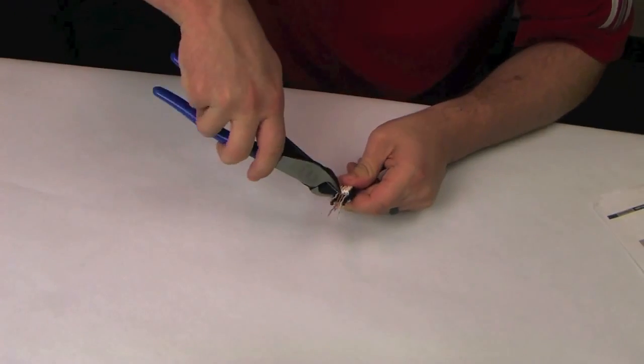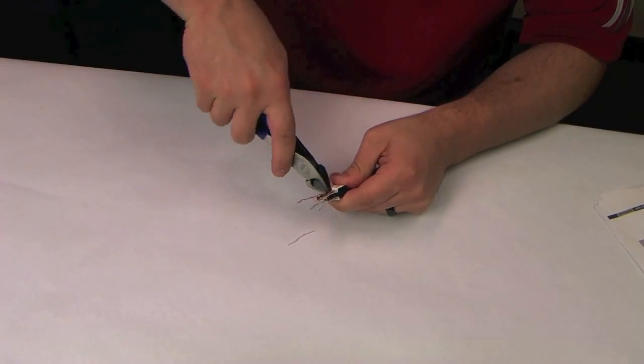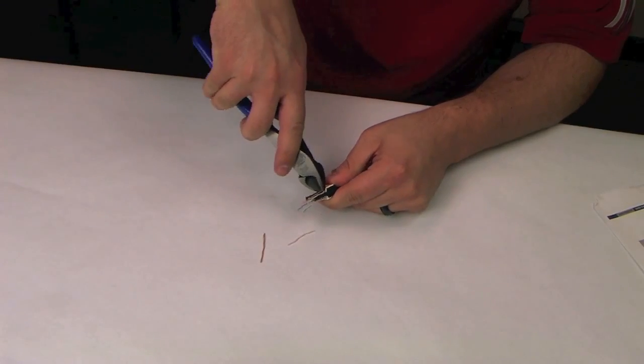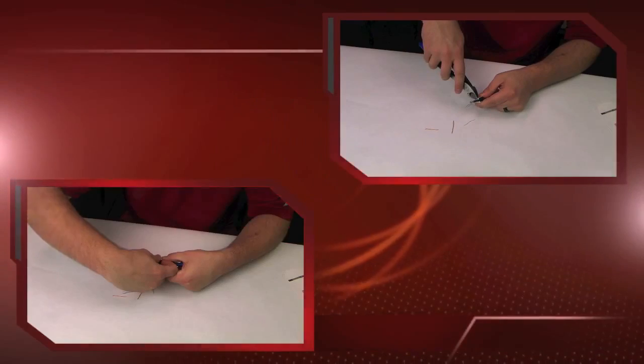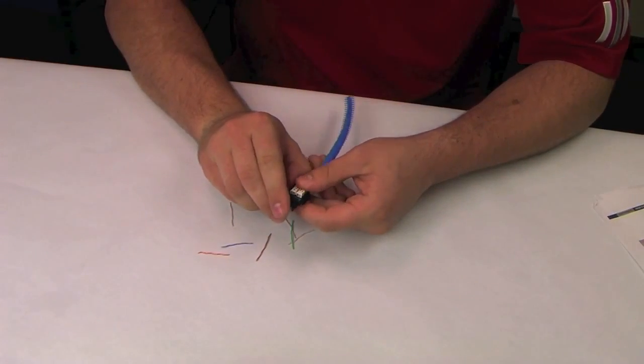Next, trim the excess wires using diagonal cutters with a flush cutting edge. Remove the wire manager assembly aid.